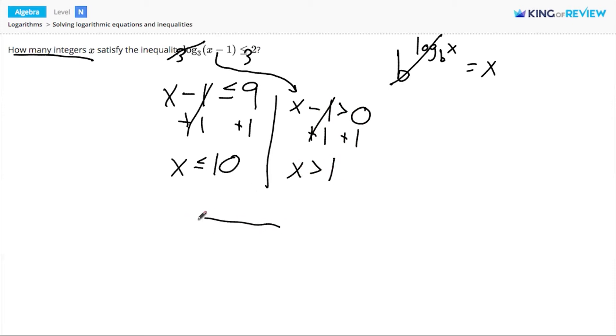To show this visually on a number line, x has to be greater than 1 and we also know it can be at most 10. So if we were to write this as one compound inequality, it would say 1 is less than x, which is less than or equal to 10.